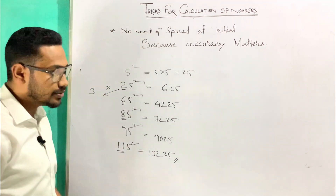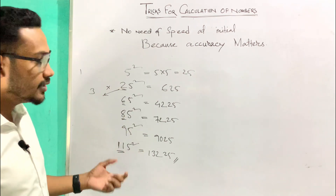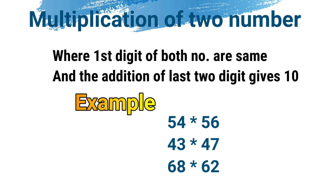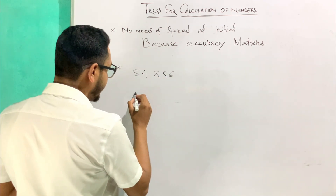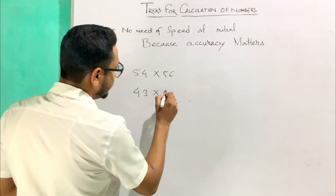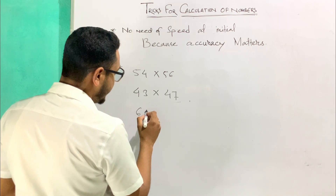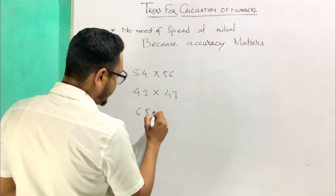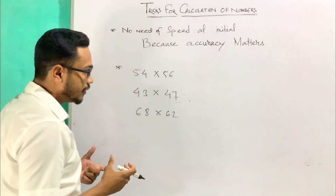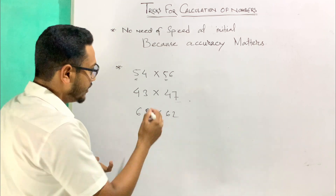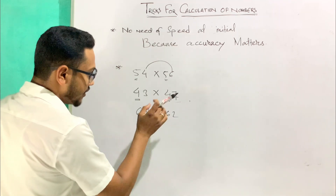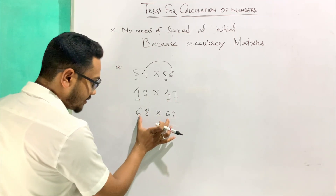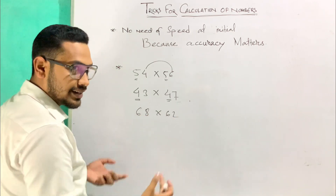These are the outcomes — quite easily. Now please try to solve some more numbers. Suppose we have 54 into 56, then 43 into 47, and also 68 into 62. You can see the conditions are the same: the leading digits are similar in both numbers, and the unit digits add up to 10. Here 7 plus 3 is 10, and 8 plus 2 is 10.